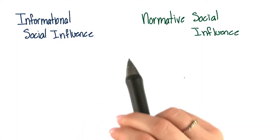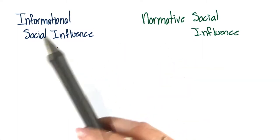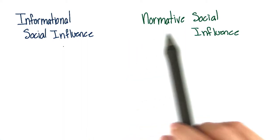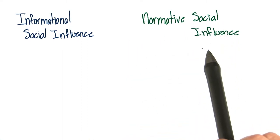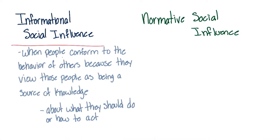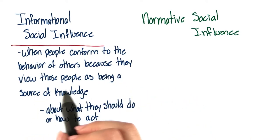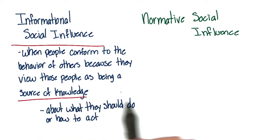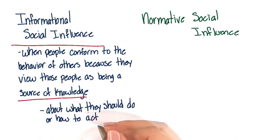There are two reasons why conformity may occur. They are informational social influence and normative social influence. Informational social influence happens when people conform to the behavior of others because they view the other people as a source of knowledge regarding what they're supposed to do or how they're supposed to act.